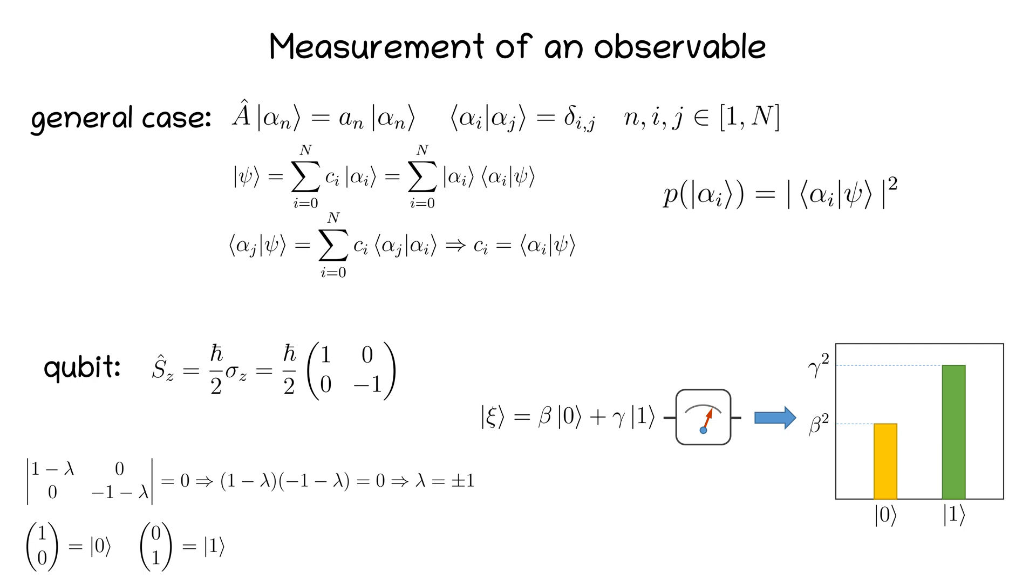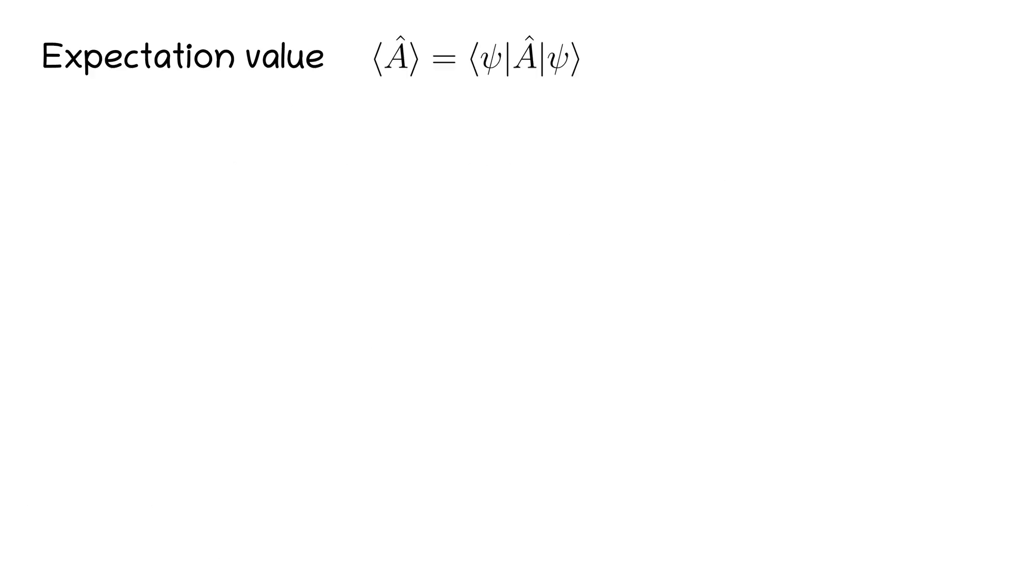Although the result of a single measurement is probabilistic, sometimes we are usually interested in the average outcome. That is the expectation value of A. In quantum mechanics, the expectation value of A taken with respect to state psi is defined in the following way. The physical meaning of mathematical formalism is that the expectation value of A is the weighted average measured value over all eigenvalues.